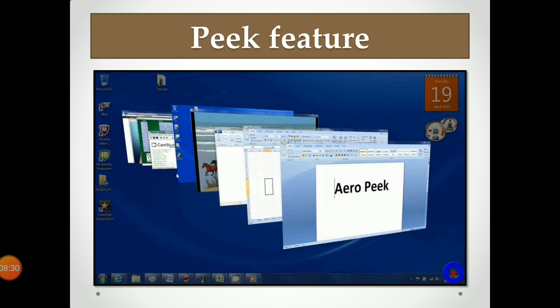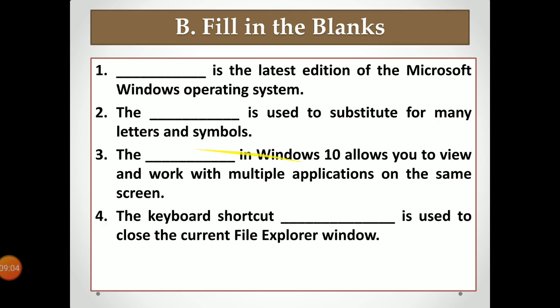This is the Peek Feature. When you press the Windows key plus Tab key together, you can use this Peek Feature. It helps you view the different files and tabs you have opened in the system — it will show them to you one by one, and whichever tab you press will open.